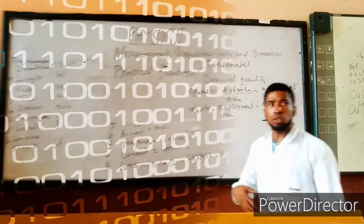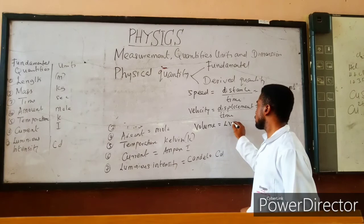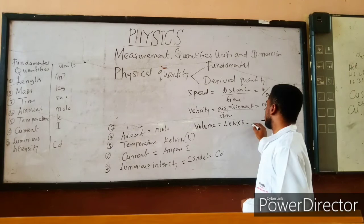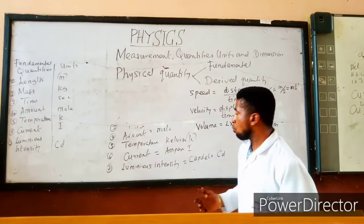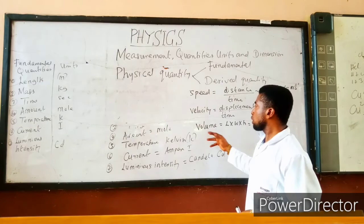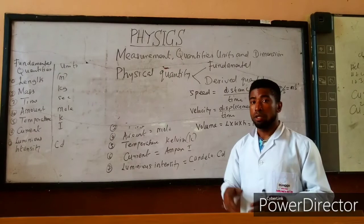Let us look at other examples of derived quantities. We have volume, which is also a derived quantity. Volume equals length times width times height, and length is measured in meters, width is also in meters. In our next class, we will complete these derived and fundamental quantities — what I gave you here is just a few examples. Remember to subscribe and enjoy our full package. Thank you very much for watching. God bless you.